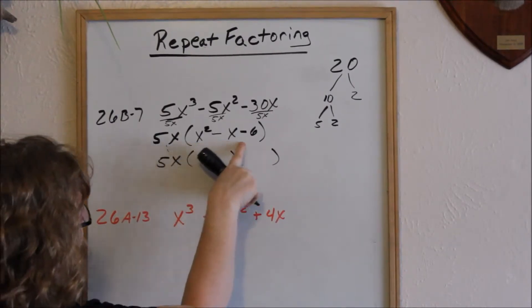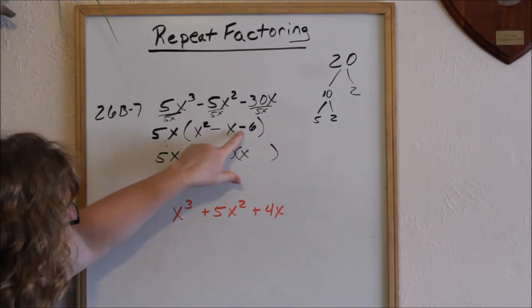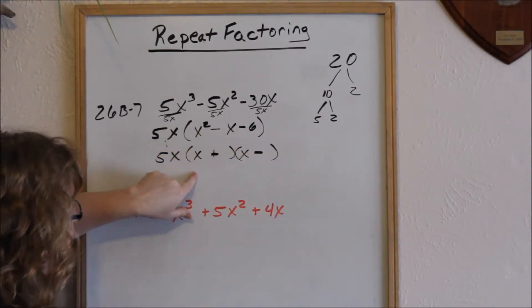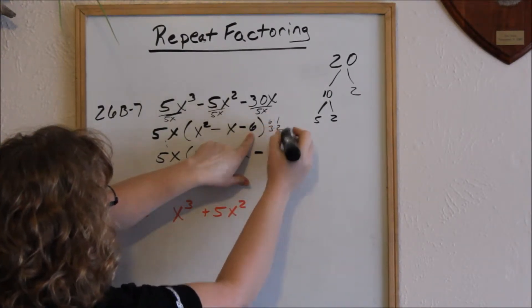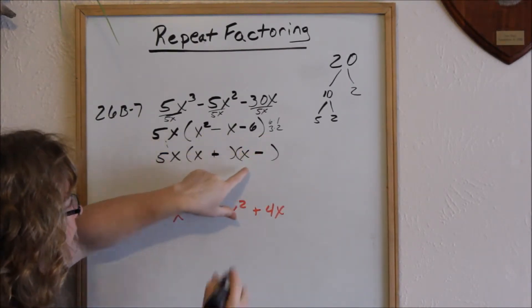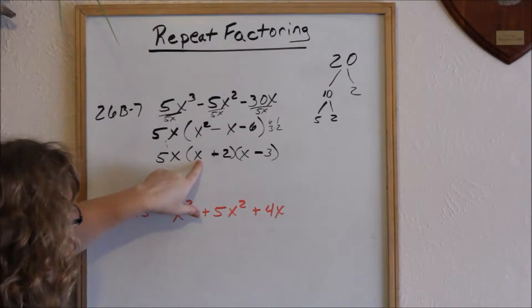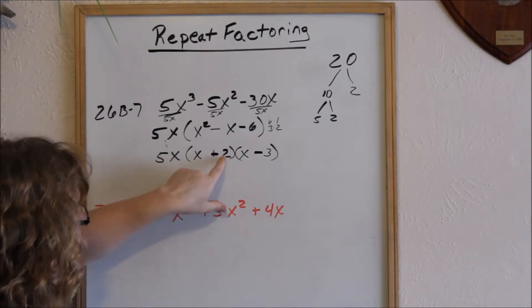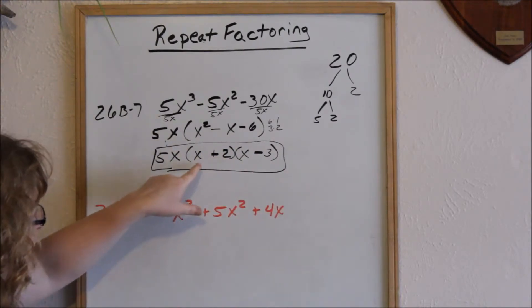Now we're ready to factor the trinomial into two binomials. Factors of x squared are x and x. Look at your signs — this is a negative, and the only way to get a negative is to have a positive times a negative. Factors of 6 are 6 and 1, or 3 and 2. I'll use 3 and 2 because I need to get a negative 1. Since I need negative 1, my 3 needs to be negative. Check: negative 3x and positive 2x gives negative 1x, and positive 2 times negative 3 gives negative 6. So we cannot factor any more — we've factored until we can't factor any more.